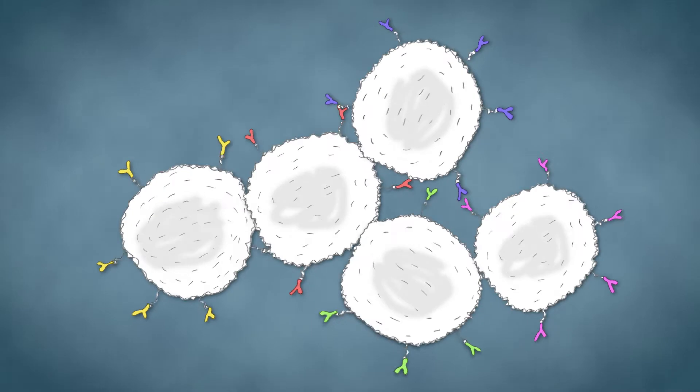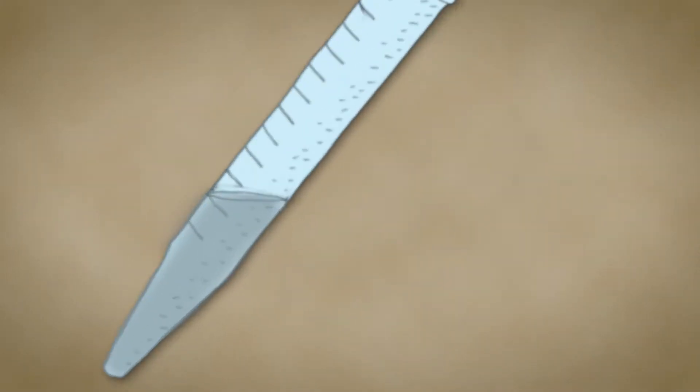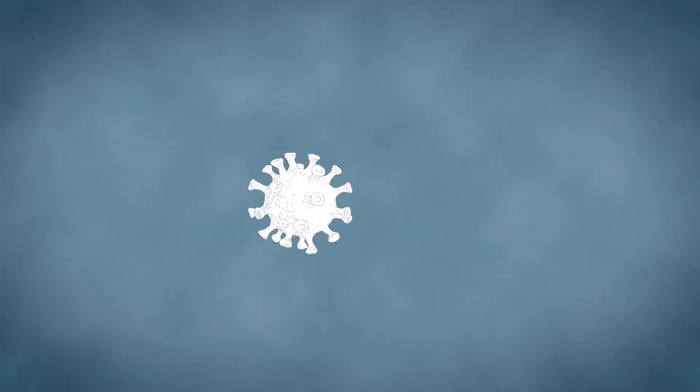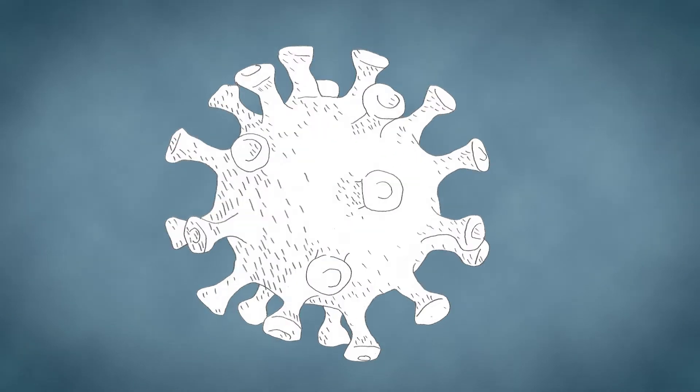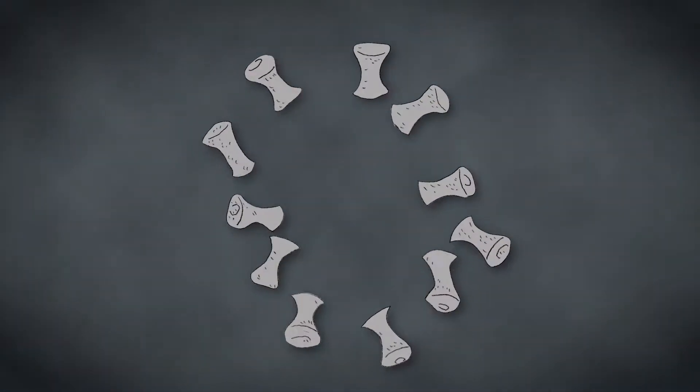Next, the scientists combine the yeast with an antigen, a protein that signals the presence of a viral or bacterial enemy. In this case, the antigen is a coronavirus spike protein, the structure used by the virus to invade human cells.